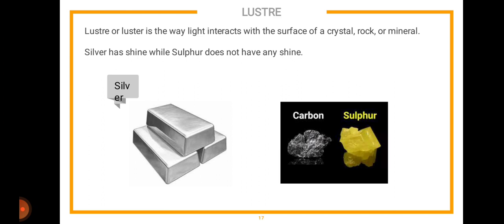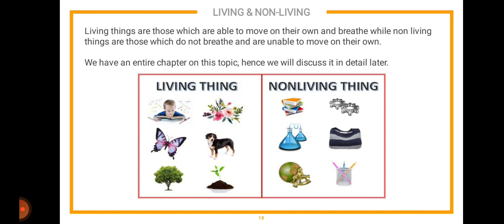Luster — also spelled lustre — refers to the way light interacts with the surface of a crystal, rock, or mineral. For example, silver has shine, but sulfur does not. Items which have shine are called lustrous; items which do not have any shine are called non-lustrous.